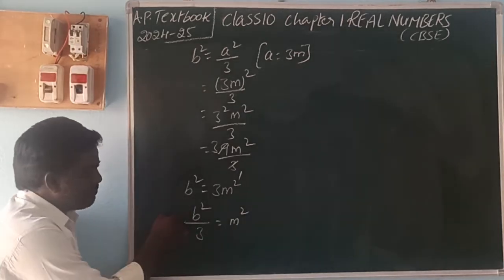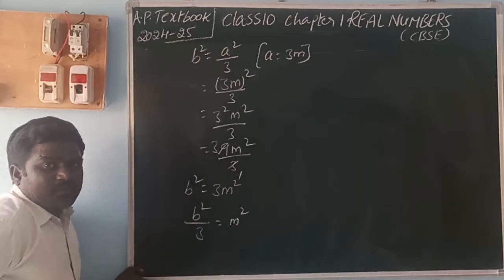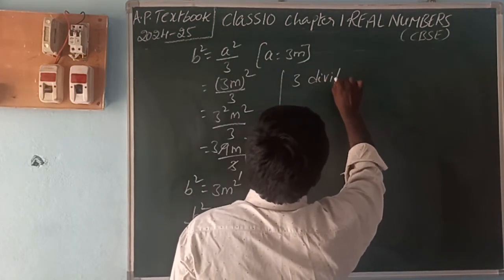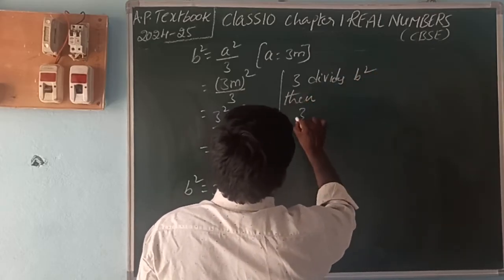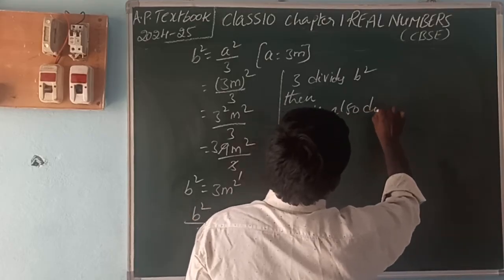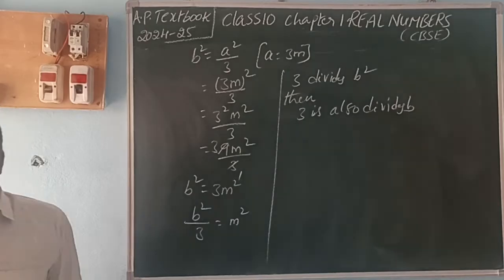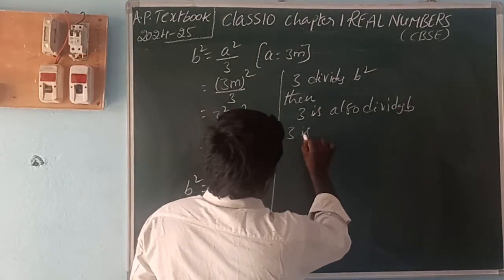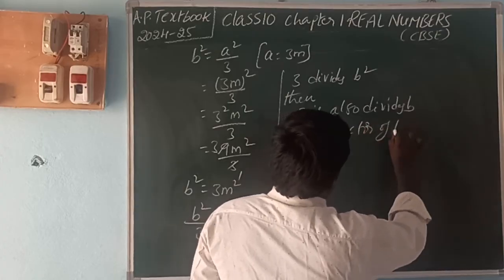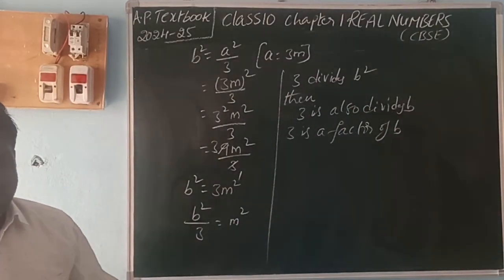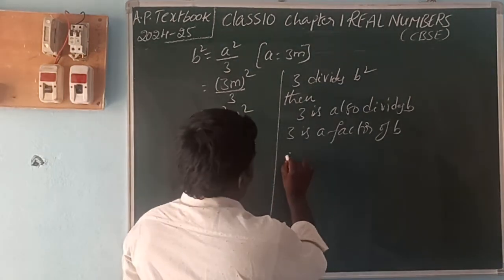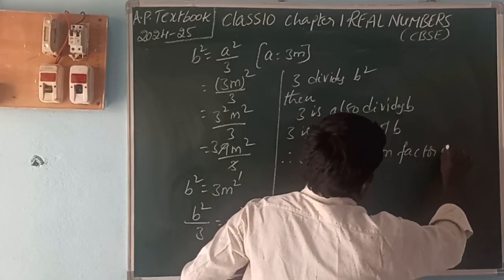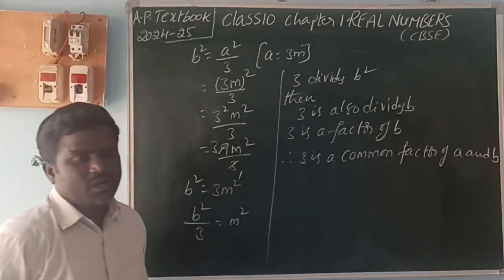Since b squared is divisible by 3, by the same theorem — if p divides b squared then p also divides b — we get that 3 divides b. So the remainder is zero, meaning 3 is a factor of b. Therefore, 3 is a factor of a and 3 is also a factor of b.